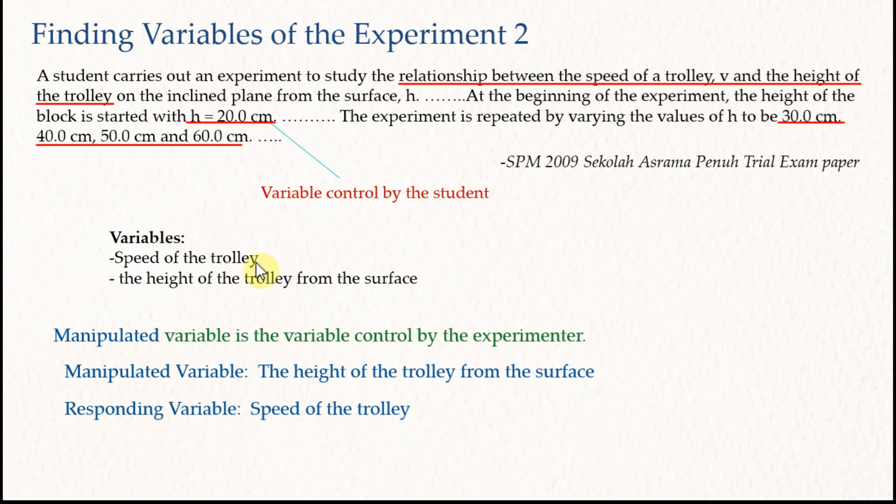How about the fixed variable? The fixed variable is the variable that you must keep it unchanged in the experiment. For example, in this experiment, you must use the same trolley throughout the experiment because different trolleys may have different frictions. You must also use the same runway so that the friction is constant throughout the experiment. If the friction changed, the result will be different and the experiment fails. So therefore, in this case, the fixed variables are the same trolley or the same runway.